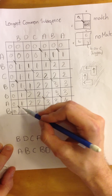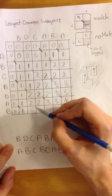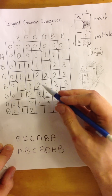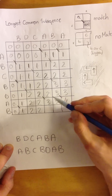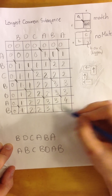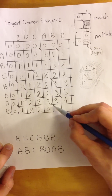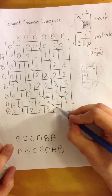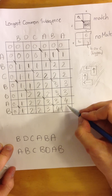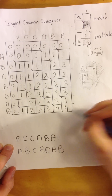The last row: B and B — match, we have a bridge, zero plus one is one. B and B — no match, two. C and B — no match, two. A and B — no match, three. B and B — we have a match, we create a bridge, three plus one is four. A and B — no match, but the biggest value is 4.